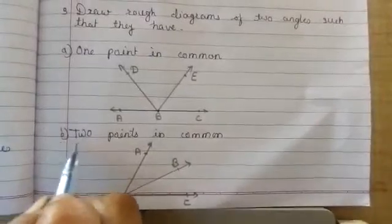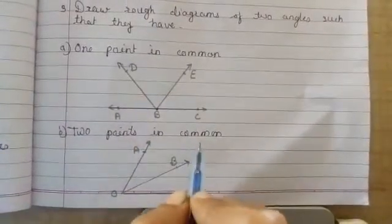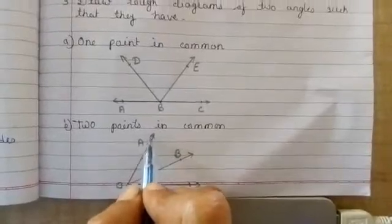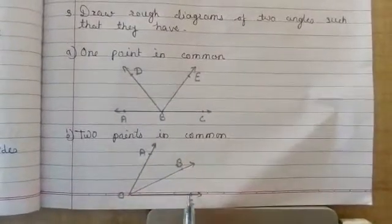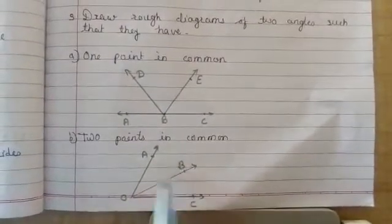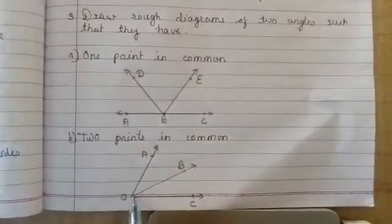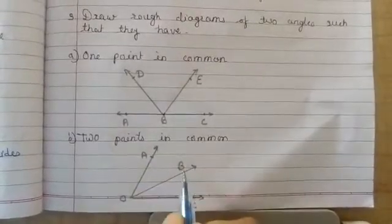Part b is two points in common. Again, here are two angles: angle AOB and angle COB. And two points in common are point O and point B.